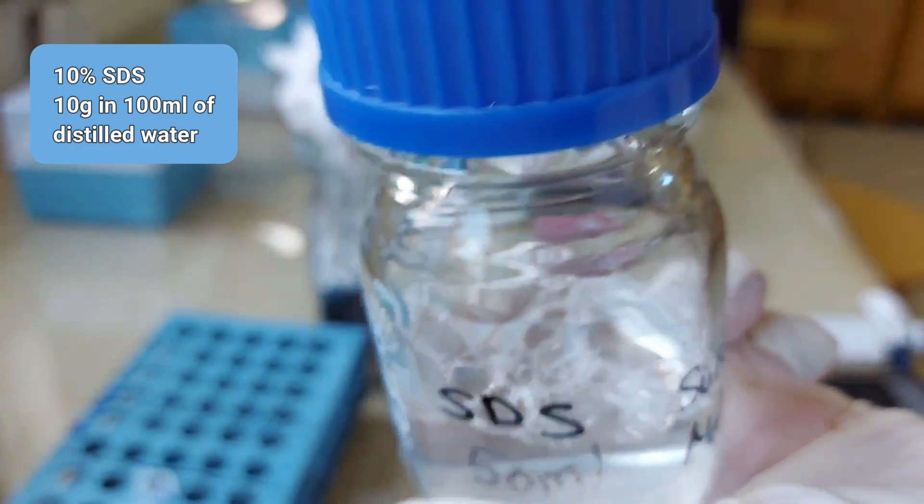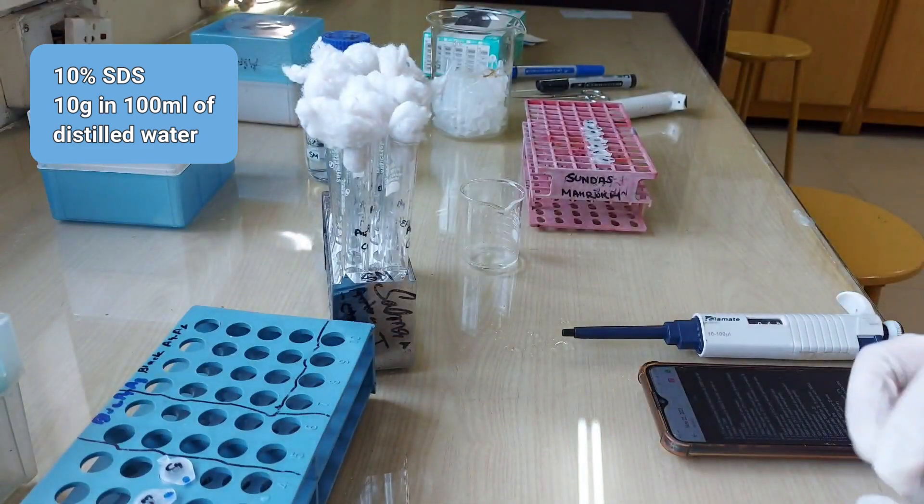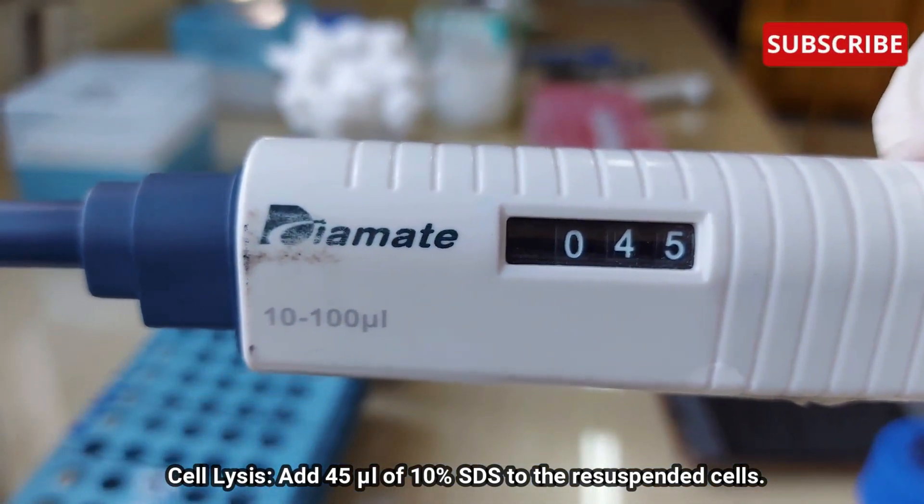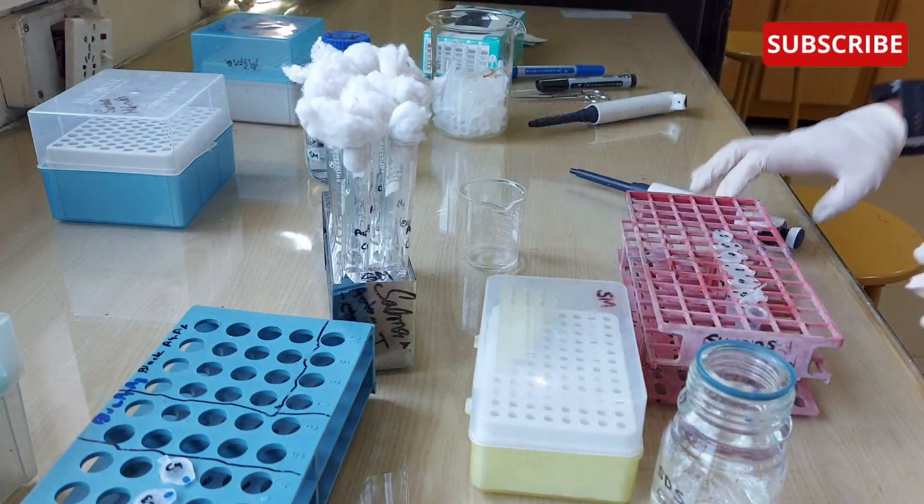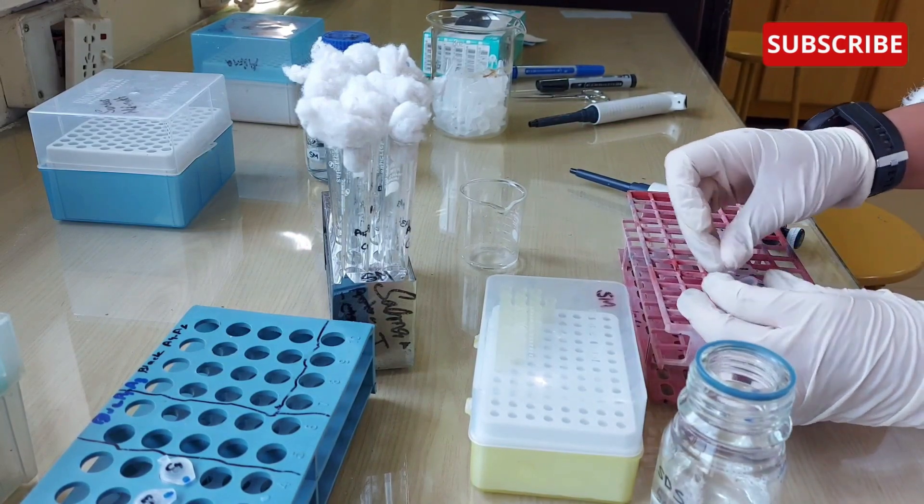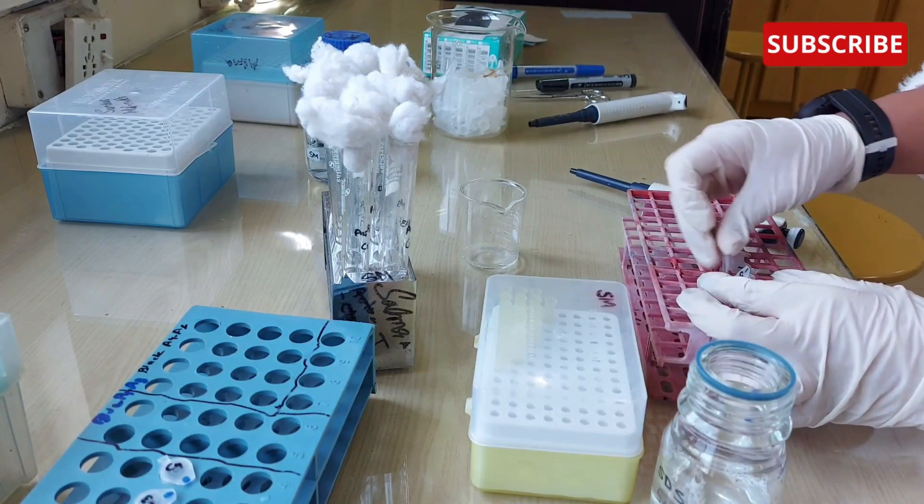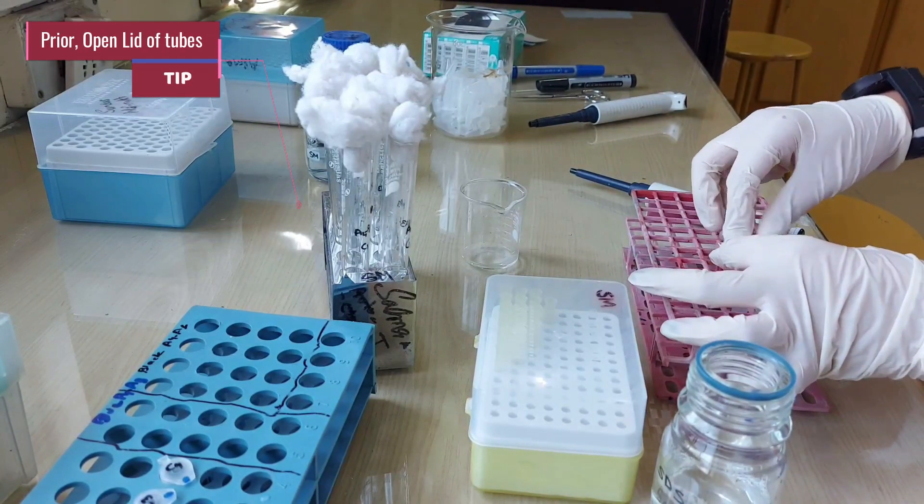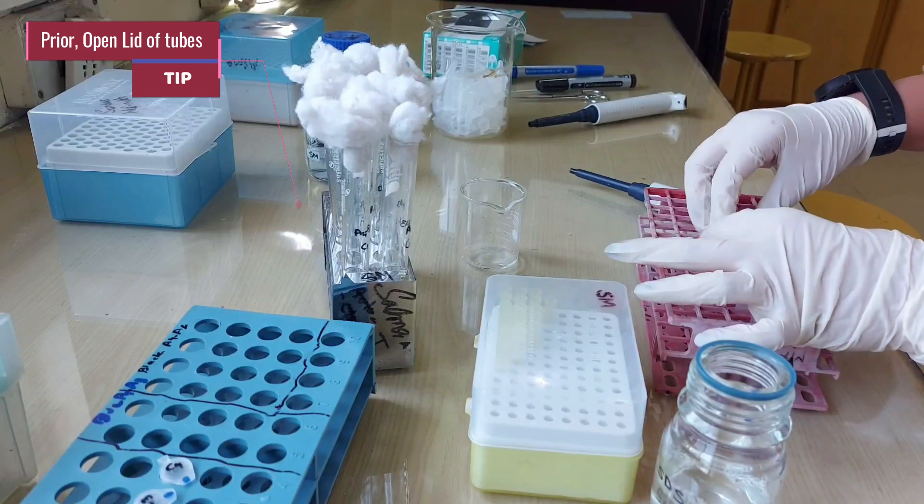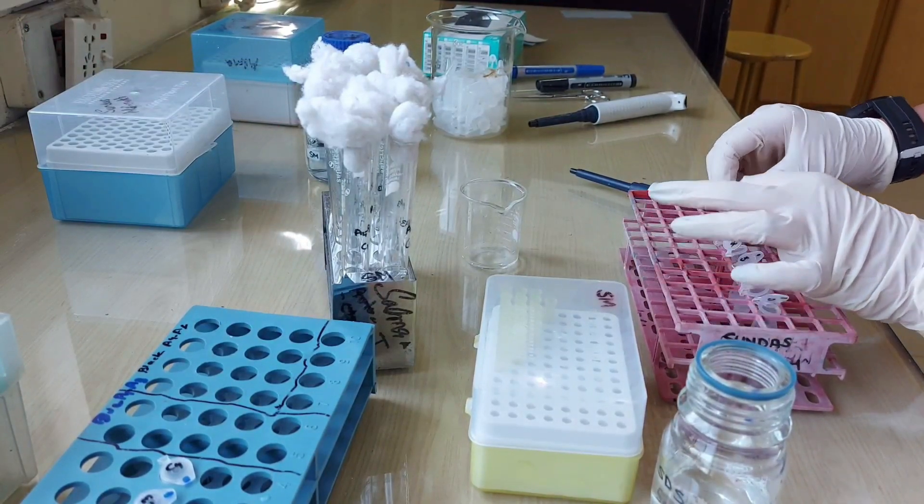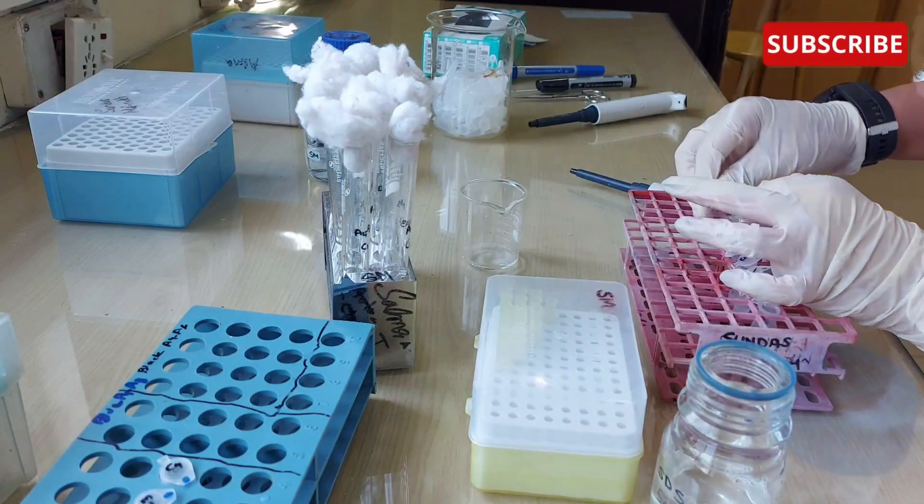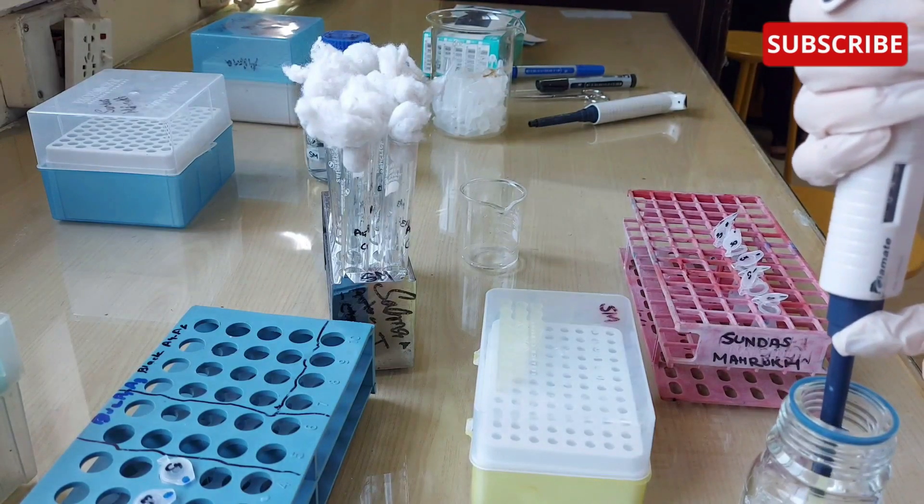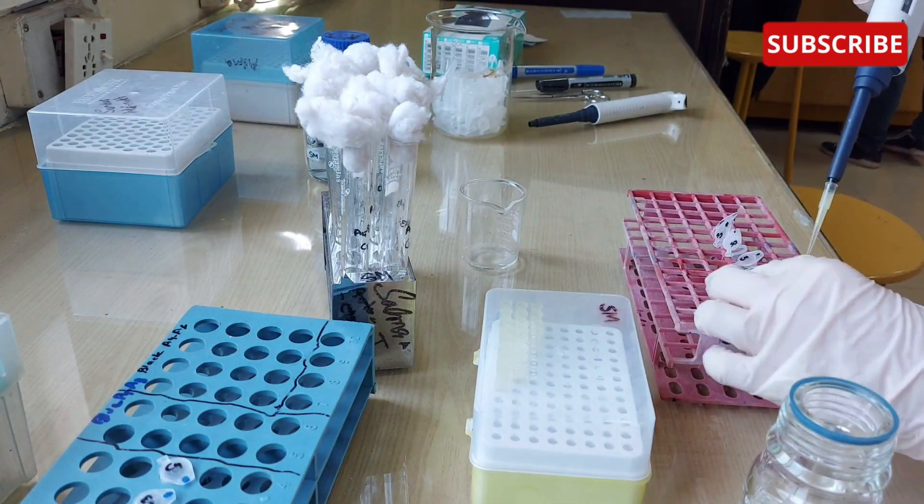Now the next procedure is the lysis of the cell. For that we will need SDS, which is sodium dodecyl sulfate. Now setting my pipette to 45 microlitre, I will add 10% SDS into the resuspended cells. Here is a tip if you have many samples to work with. Open all the lids of the eppendorfs so it is easy for you to work with. There will be less contamination as well. Now take 45 microlitre of 10% SDS and add it to resuspended cells.